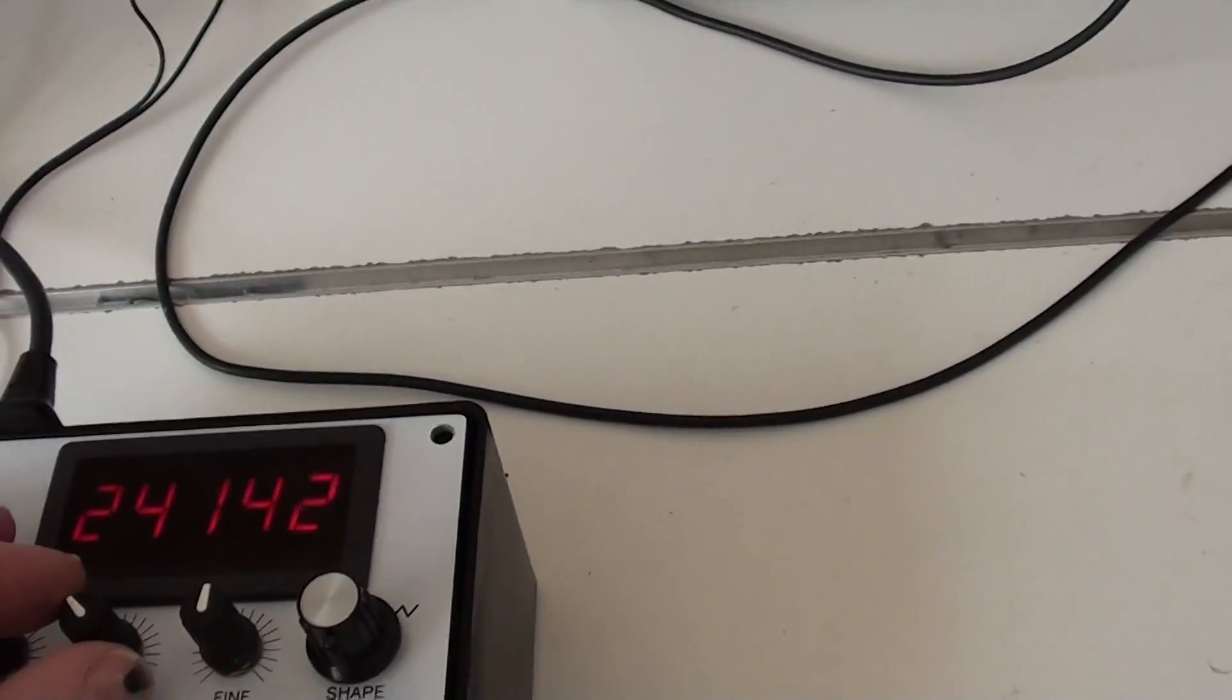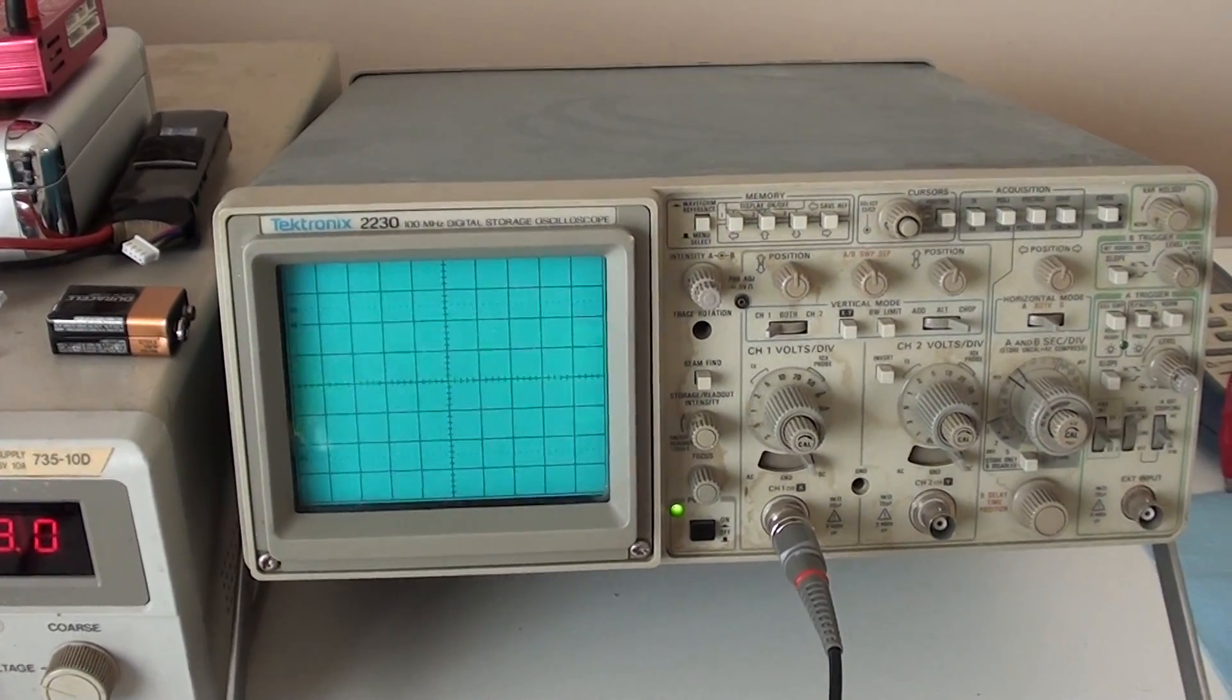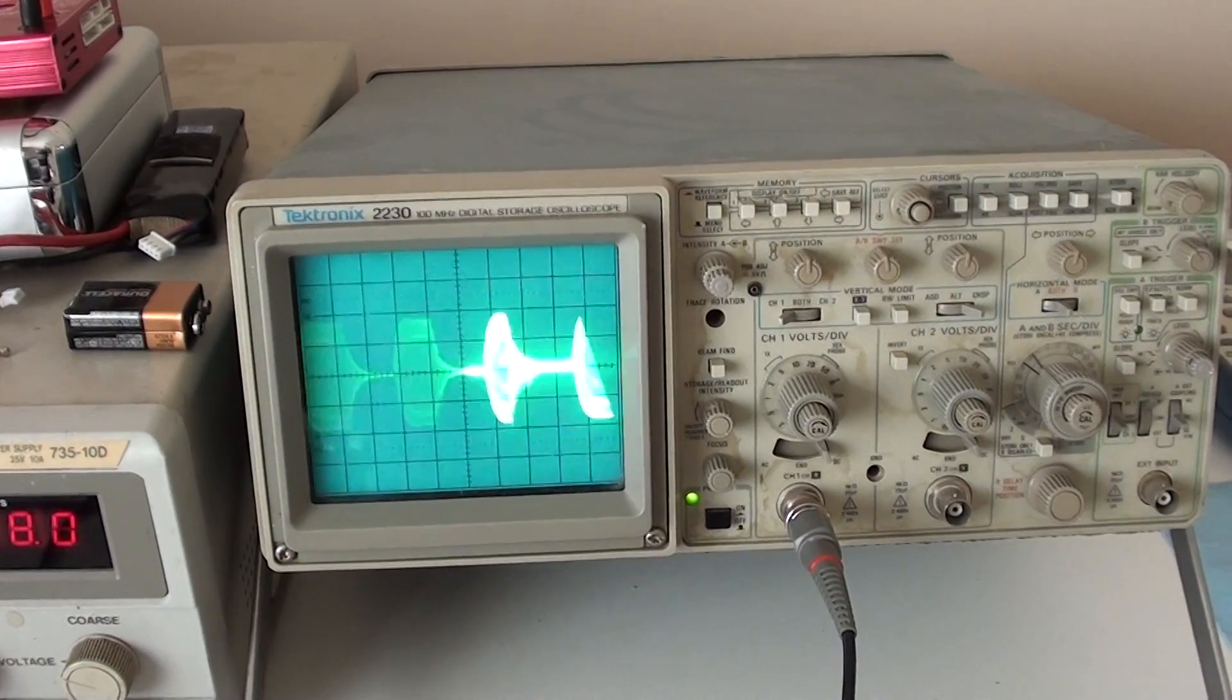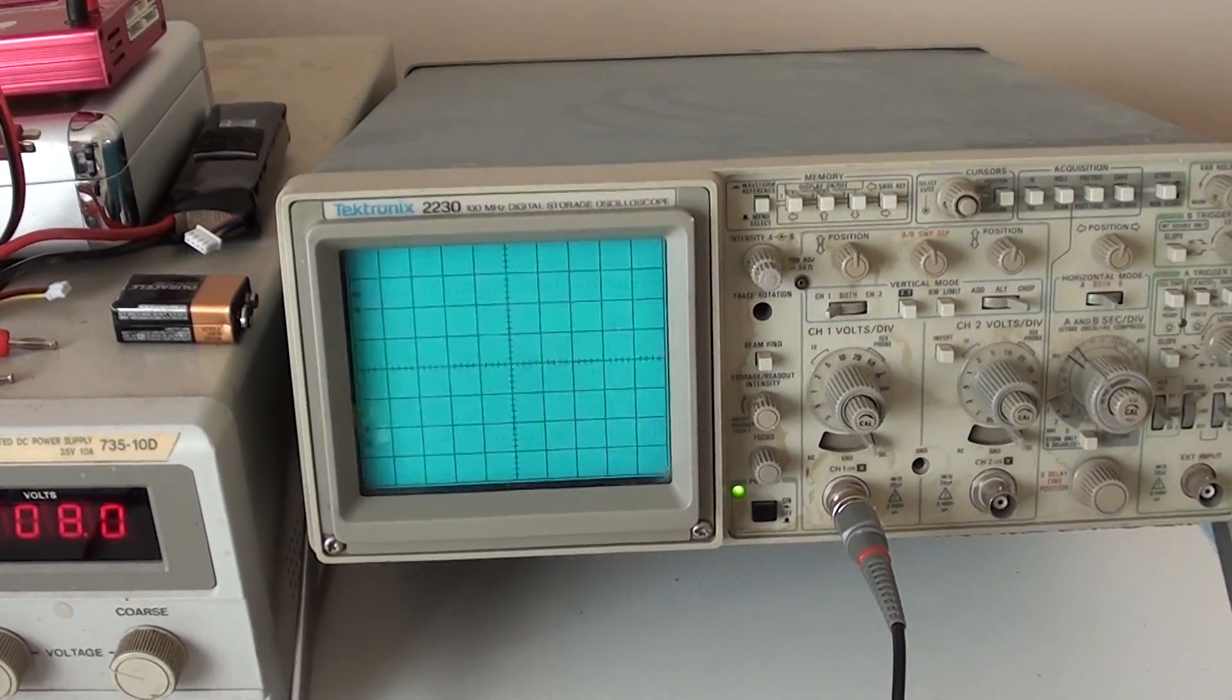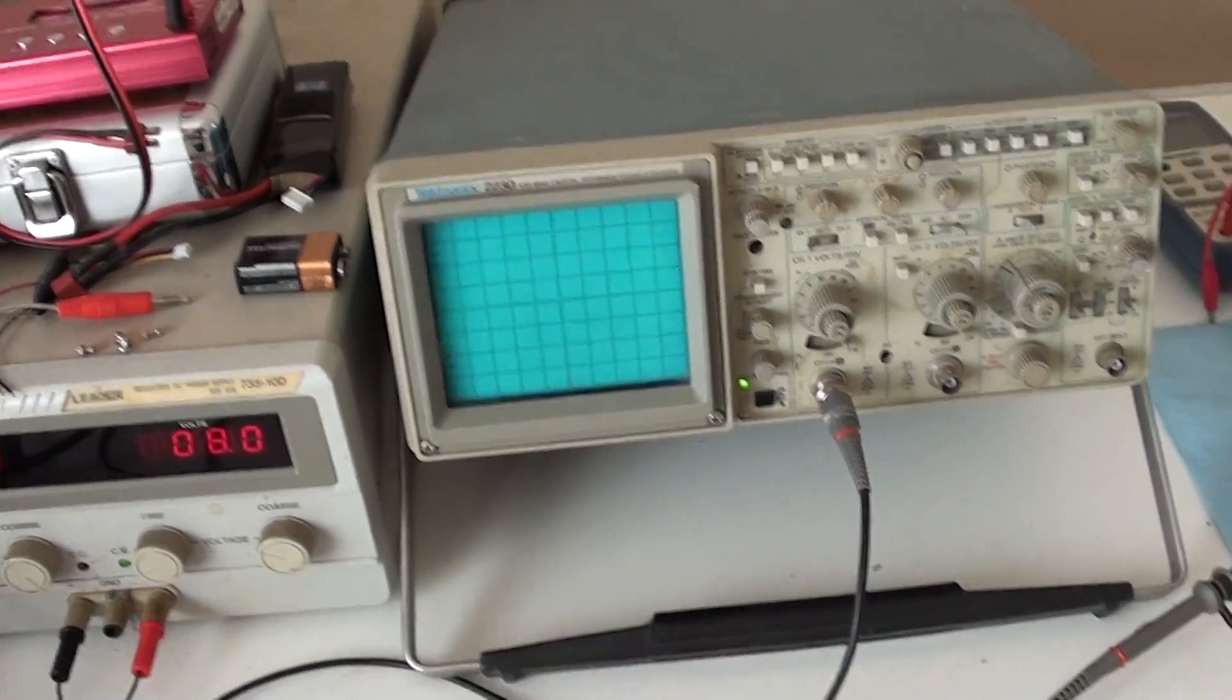And you can see if I adjust my frequency up and down. I mean, just a hair, it doesn't take much. So right there we're in a 24,000 hertz range. Okay, alright, that's AC.